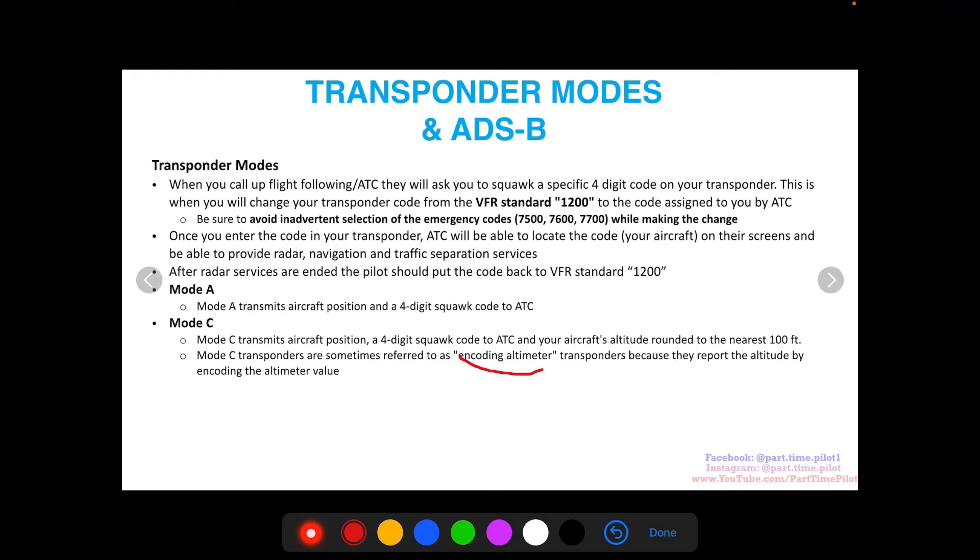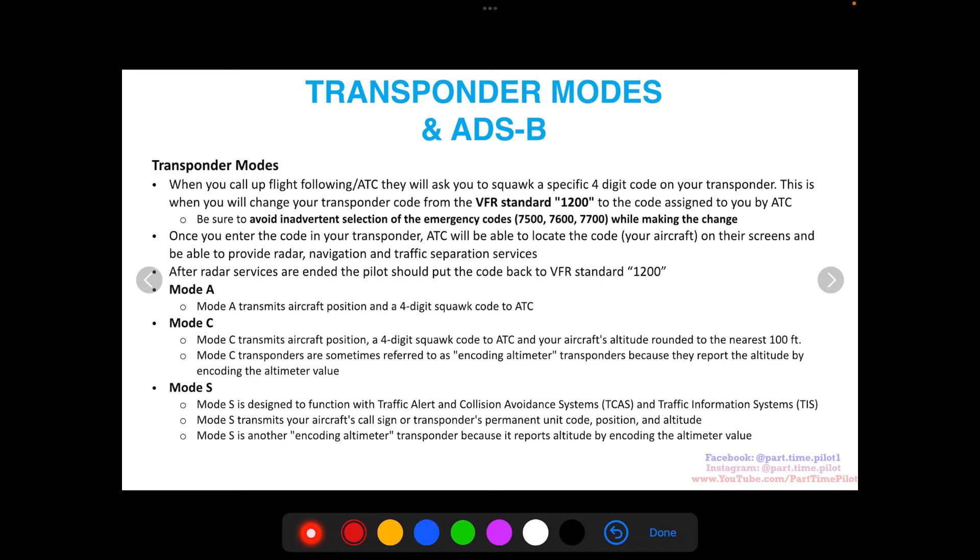Mode S is designed to function with traffic alert and collision avoidance systems (TCAS) and traffic information systems (TIS). Mode S transmits your aircraft's call sign or transponder's permanent unit code, your position and altitude, and is another encoding altimeter.